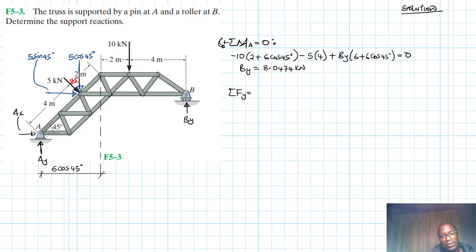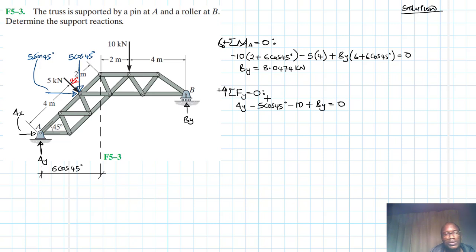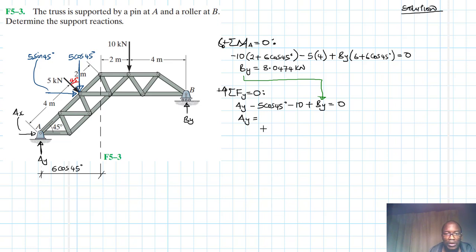Summation of forces in the Y direction equal to zero — taking upward as positive: AY minus 5 cos 45 minus 10 plus BY equals zero. Substituting the value of BY already found, AY equals minus 5 cos 45 minus 10 plus 8.0474, giving AY equal to 5.4881 kilonewtons.